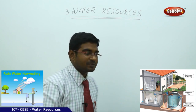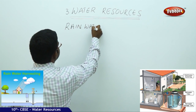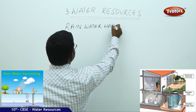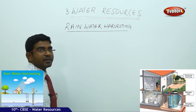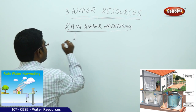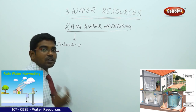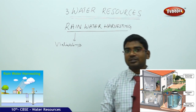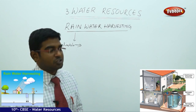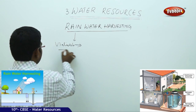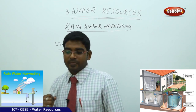Rainwater harvesting is the most viable means and the best alternative for the so-called multi-purpose projects, because here you do not find any kind of negative impacts coming into the picture. But before going into this, let us try to find out the traces of the rainwater harvesting system in India.